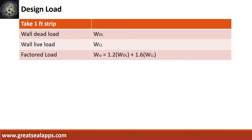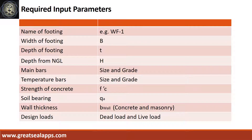Get the factored load from dead load and live load. Enumerate input parameters required: name of footing like WF1, width of footing, depth of footing, depth from natural grade line, main bars with size and grade, temperature bars with size and grade, strength of concrete, soil bearing capacity, wall thickness with concrete or masonry, and design loads.